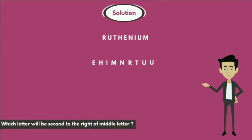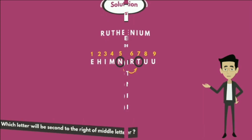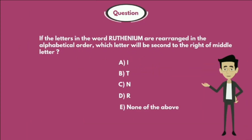There are nine letters in the word, so the middle letter is N (the 5th letter). The letter second to the right of the middle letter N is T. So the answer is Option B - T.